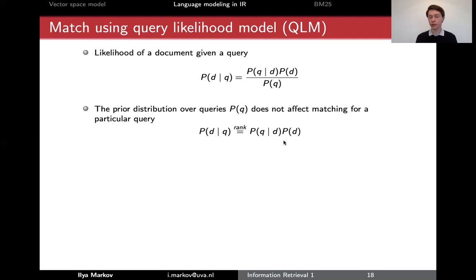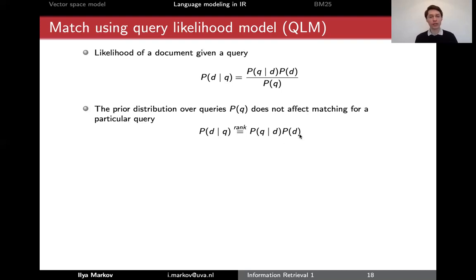Another suggestion could be using something like PageRank, because PageRank can represent the quality of a document when there is no query — it's based on incoming and outgoing links — but you can only use it in web search and can't apply PageRank to standard documents. In general it's assumed that this prior probability distribution is uniform, and if it's uniform it doesn't change the ranking.